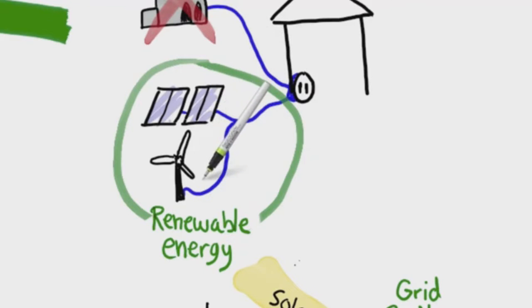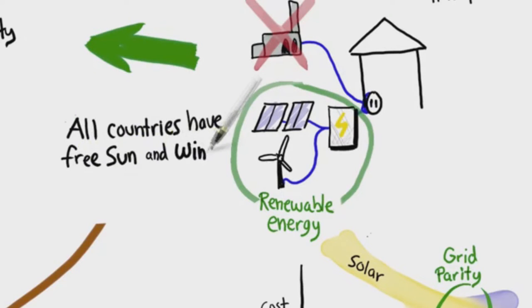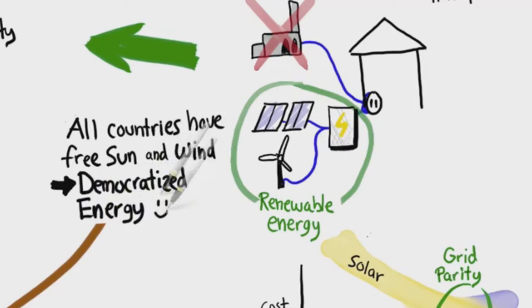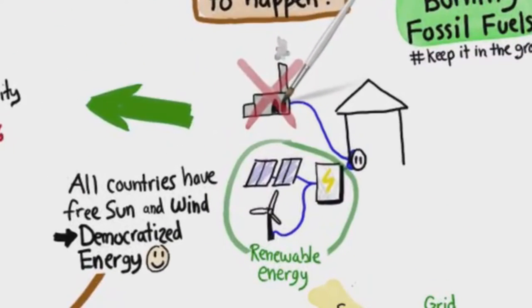Of course we need energy even when the sun isn't shining and the wind isn't blowing, so the next big challenge is energy storage. But battery technology and other storage solutions are catching up fast. An added bonus is that all countries have free access to sun and wind—it's basically democratized energy, so less need for countries to bicker over oil reserves and gas pipelines. Of course we have other non-fossil energy alternatives too: nuclear, hydro, biofuel, geothermal. From a global warming perspective, anything is better than burning fossil fuels.